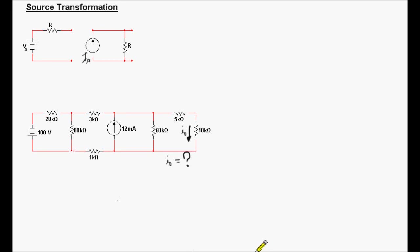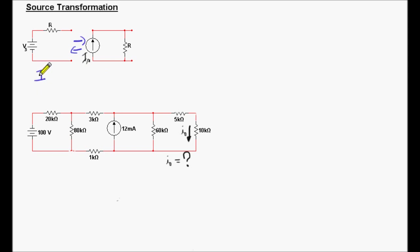Source transformation. Why do we use source transformation? We do that to simplify circuits. It allows us to exchange a voltage source and a series resistor for a current source and a parallel resistor, and vice versa. The relationship between those combinations is given by the following equation: Is equals Vs divided by R, where S stands for source.